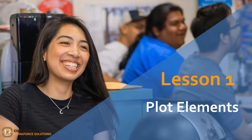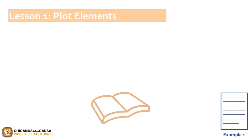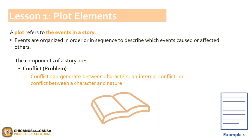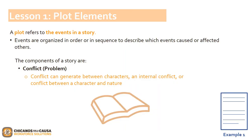Let's begin with Lesson 1, Plot Elements. A plot refers to the events in a story. The events are organized in order or in sequence, describing which events caused or affected others. The components of a story are conflict — conflict can generate between characters, as an internal conflict, or conflict between a character and nature. Another component of a story is tension, feelings of hostility. Conflict creates tension; therefore, when it's resolved, the tension ends.